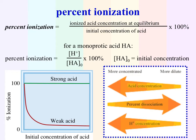Now let's discuss percent ionization. We can determine the percentage of ionization that has occurred for a specific acid or any kind of electrolyte using this equation. The ionized acid concentration at equilibrium goes on top, the initial concentration of the acid goes on bottom, and we multiply by 100. For a monoprotic acid, percent ionization equals H plus divided by the initial concentration of HA times 100.